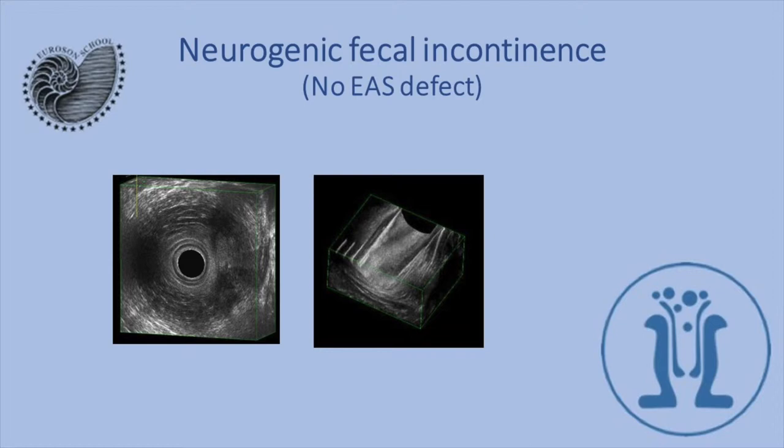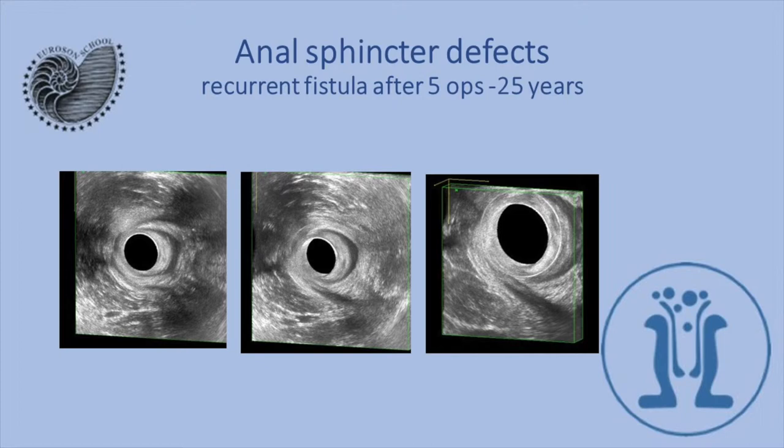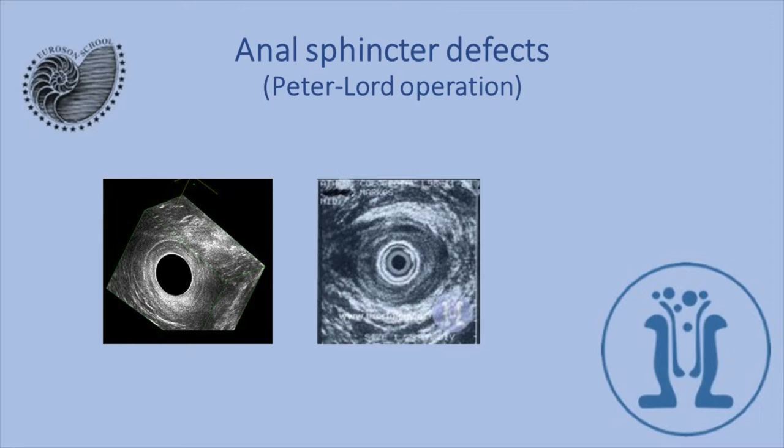Here we see sphincter defects in a 56-year-old man who had multiple operations and a recurrent fistula. He also has this sphincter defect, and the surgical operation should be very cautious because he can be left with fecal incontinence. Here we see anal sphincter defects after Lord's operation — anal dilatation.